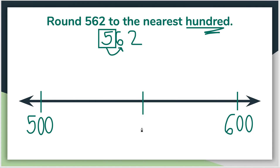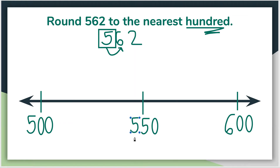Now finding our benchmark in the middle. When I think of one hundred, I need to think of what half of one hundred is. Half of one hundred would be 50 — I like to think of it as one hundred cents in a dollar, and half of a dollar is 50 cents. So it has to end with a 50, but I'm already in the five hundreds, so I need to keep that five hundred in the hundreds place. So we have 500 as our first benchmark, 550 as our second benchmark, and 600 as our last benchmark.